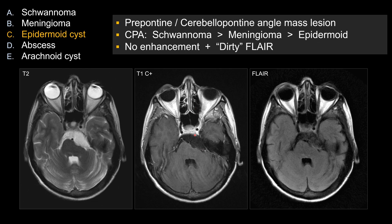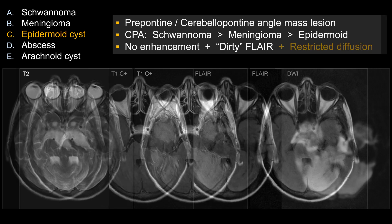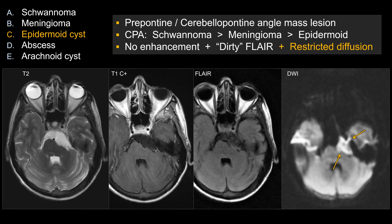In this case, you can see there is no enhancement, and there is a lack of complete suppression on FLAIR. Otherwise, if this were exactly like CSF on all sequences, you would be looking at a potential arachnoid cyst.